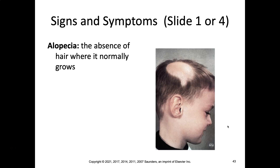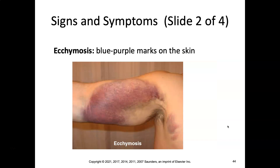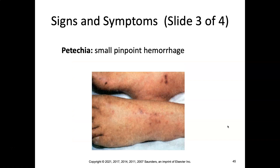There's an example of alopecia — absence of hair where it normally grows. That can be hereditary and genetic, as in male pattern baldness, or it can be disease-associated. Ecchymosis is a bruise — those blue-purple marks that eventually change to yellow-green on the skin, due to blood underneath. Petechia are small pinpoint hemorrhages and are signs that something is not right.